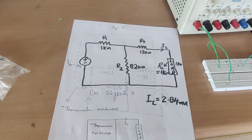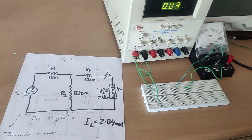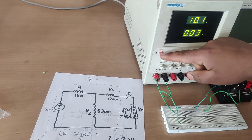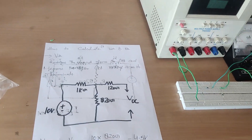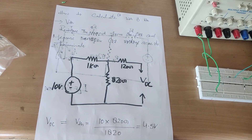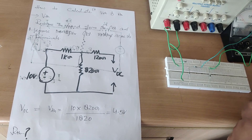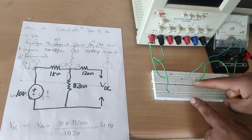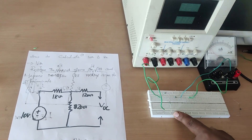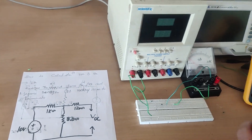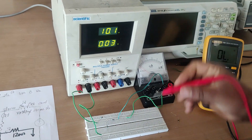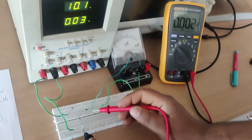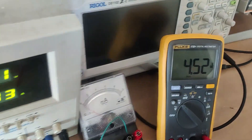Now we will reduce this circuit to a Thevenin equivalent. We need to calculate VTH and RTH. To calculate VTH, we measure the open circuit voltage — we remove the load. I have removed the load. Let's check the open circuit voltage with the multimeter. The input voltage is 10 volts and the open circuit voltage comes out to be 4.5 volts.